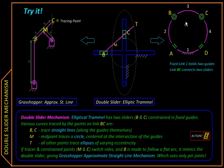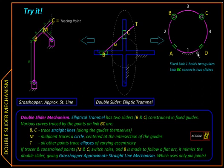We now have a mechanism with four links connected by two revolute pairs and two prismatic or sliding pairs. In this particular inversion, the sliding pairs are adjacent to the fixed link. So there will be a fixed link with two guides, two sliders within them, and a link connecting these two sliders via two pins which fully rotate.